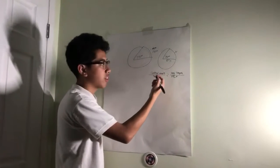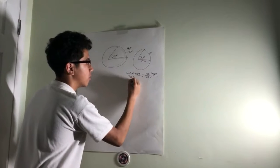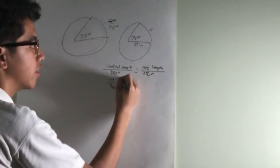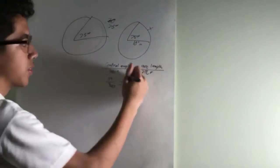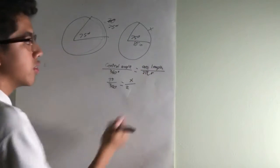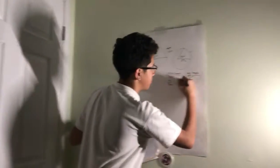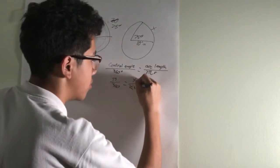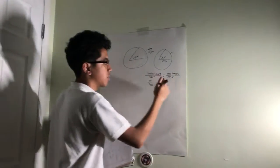So since we already know the central angle is 75 degrees, we would put 75 over 360. And the arc length is a variable, variable x for example. So we put x over 2. Since pi equals 3.14, we will use 3.14. And the radius would be 10 inches. So 10.